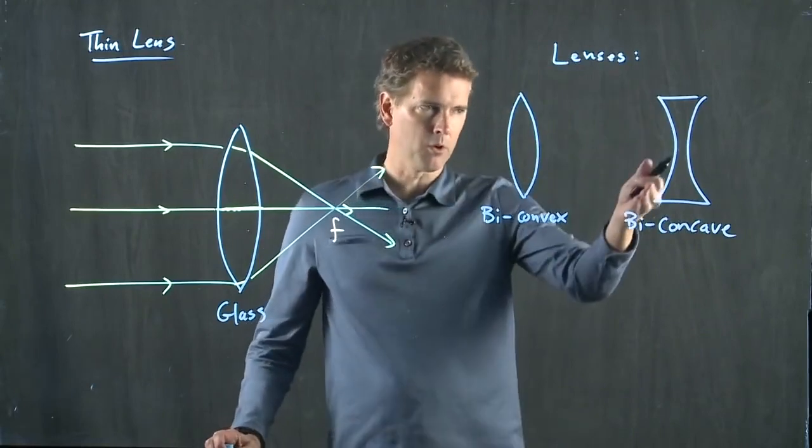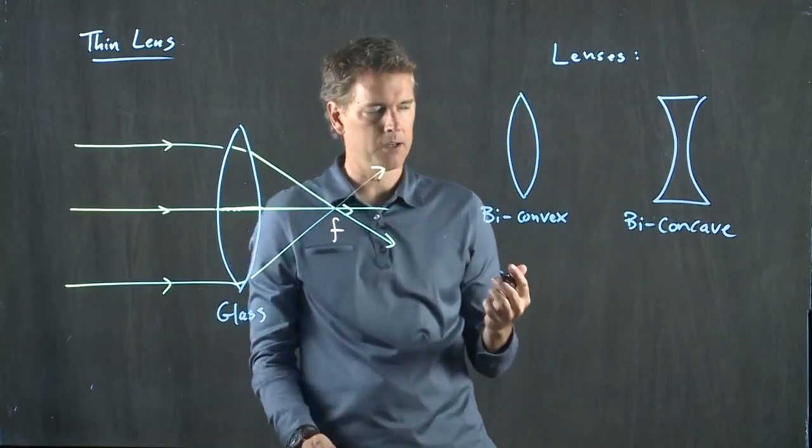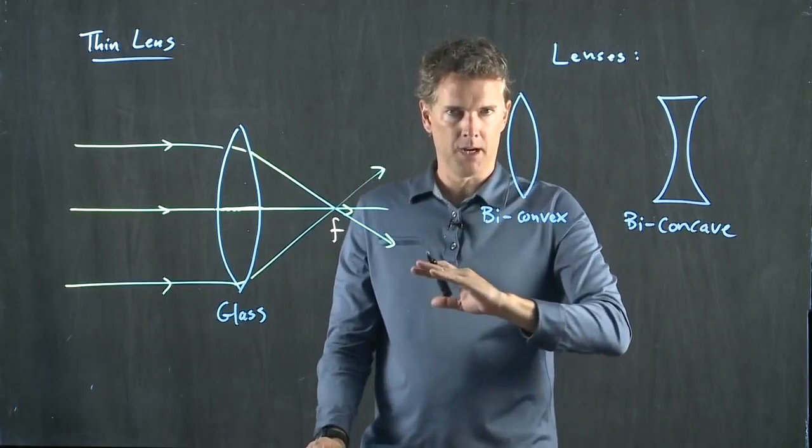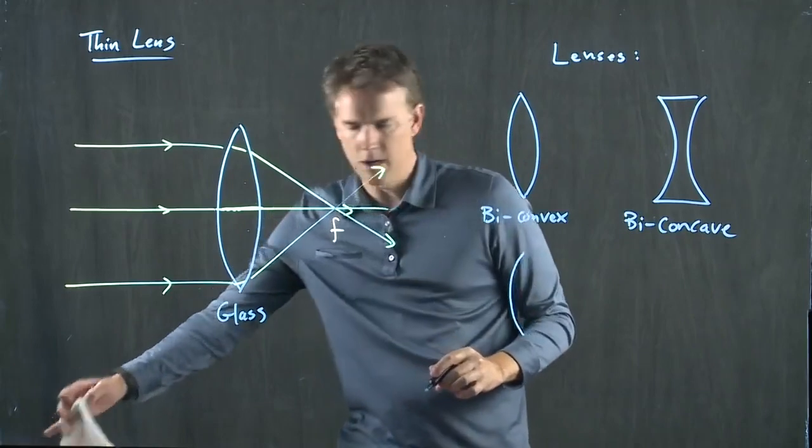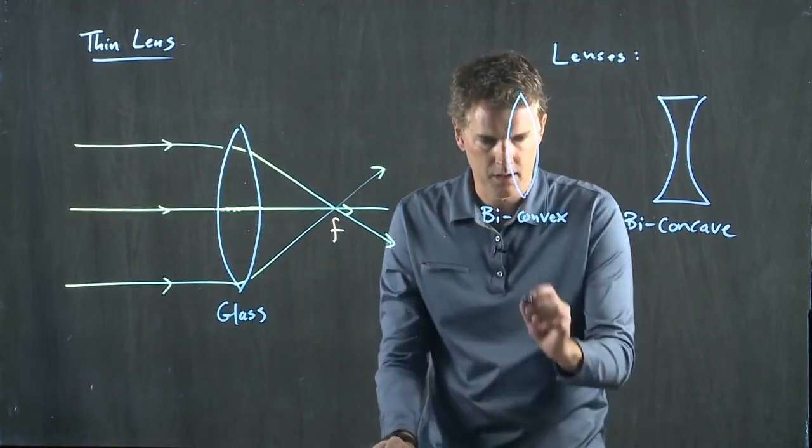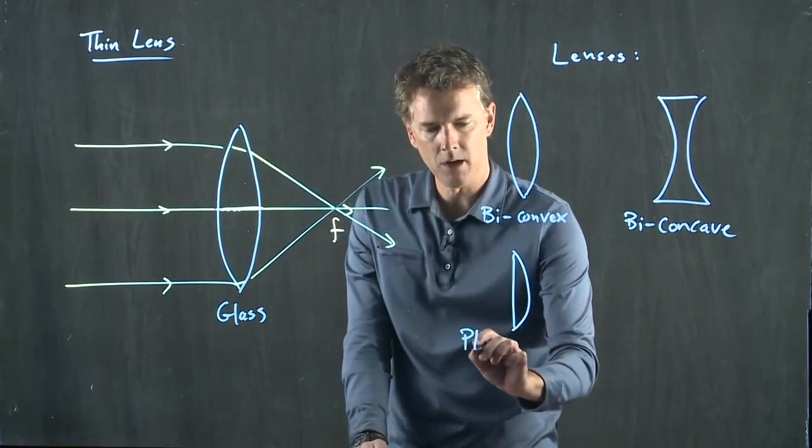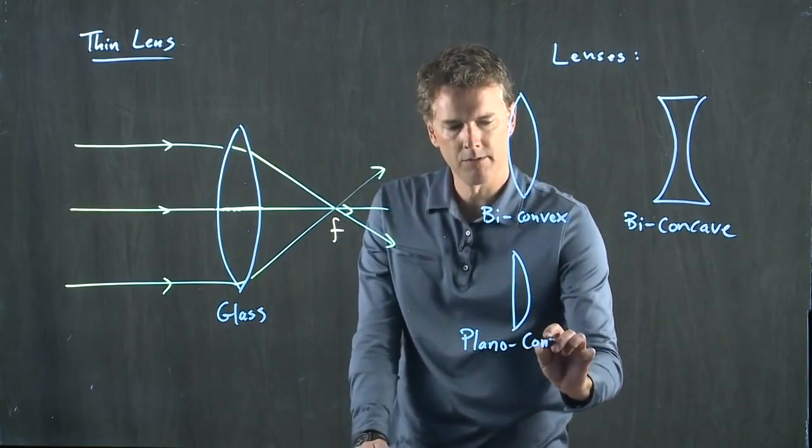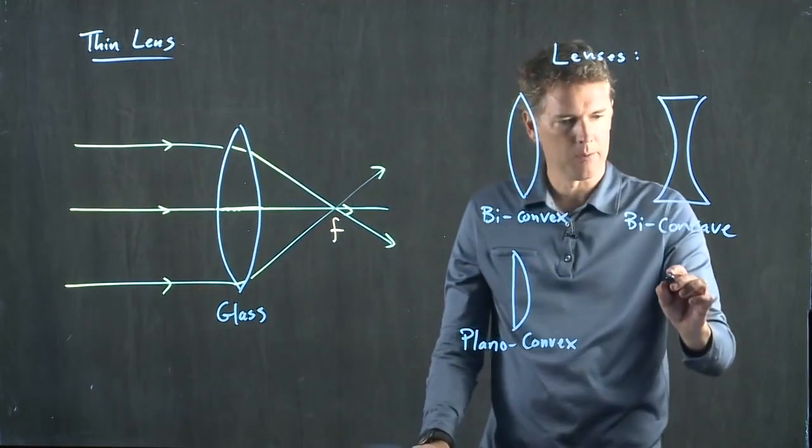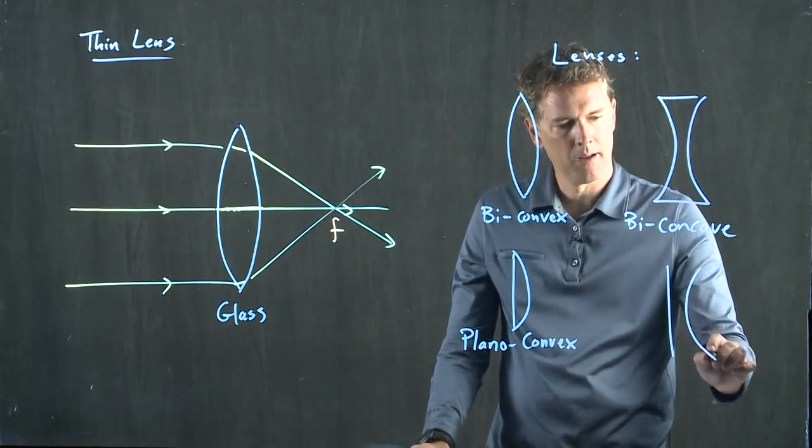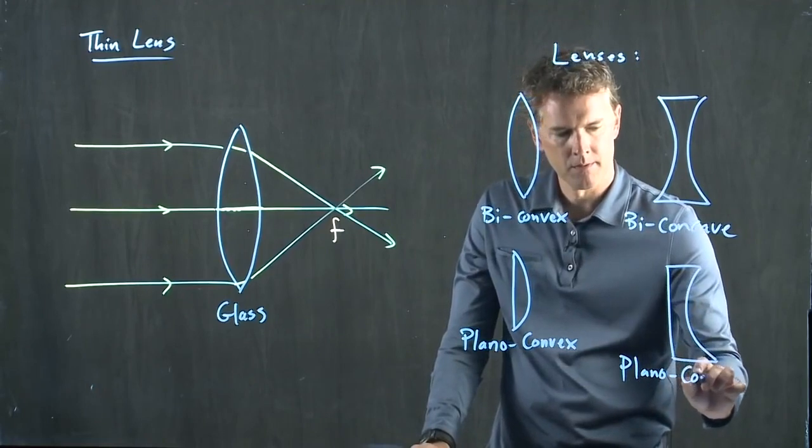Remember, cave is the one that you can crawl into. So if you can crawl into this cave, it's concave, biconcave. But they don't have to be curved on both sides. You can just have it curved on one side. And so if I curve it on one side like this, this is called planoconvex. Plain on one side, convex on the other. And likewise if I do it the other way, then it's called planoconcave.